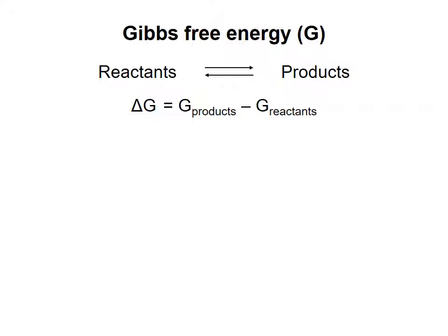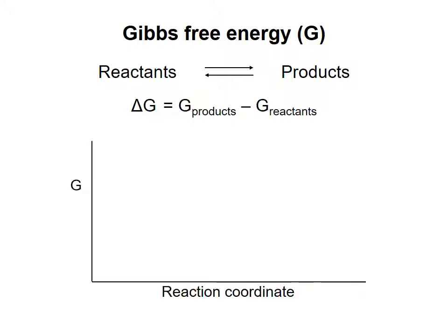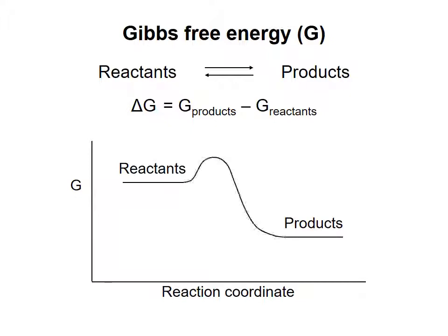To illustrate this concept, we commonly use reaction coordinate diagrams. The Gibbs free energies of the reactants and products of a chemical reaction are plotted on the y-axis, and the x-axis represents the progress of the reaction. To go from reactants to products, or vice versa, the molecules must pass through high energy intermediates, which are represented as a bump or a hill on the diagram. Keep in mind that the delta G for a chemical reaction will change depending on the prevailing conditions. Sometimes it's helpful to be able to make comparisons between different chemical reactions, without having to worry about the contribution of the environmental conditions to the Gibbs free energy.